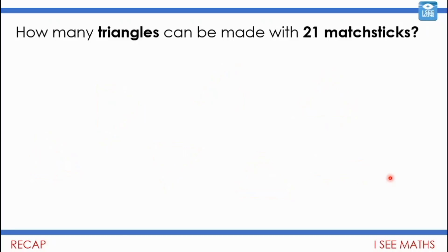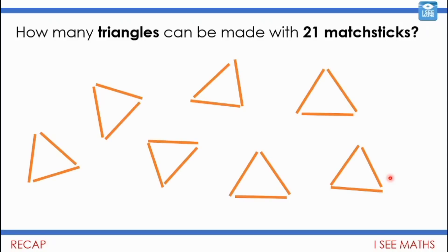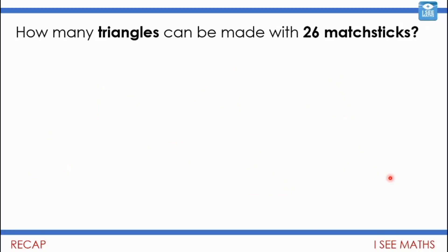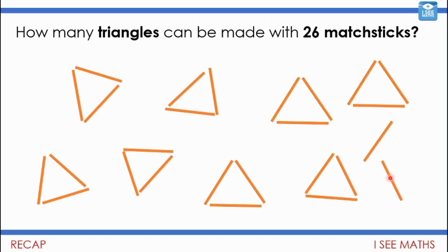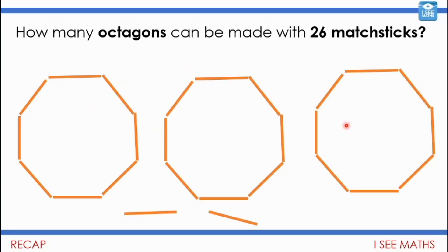Have a go at the next one — how many triangles with 21 matchsticks, and how will that be different? Seven triangles: seven lots of three is 21. Now what about 26 matchsticks? We could make seven with 21, and with those extra five, eight threes are 24, with two matchsticks left over. And how many octagons can be made with 26 matchsticks? An octagon has eight sides, so how many eights in 26? Three lots of eight is 24, with two matchsticks left over.